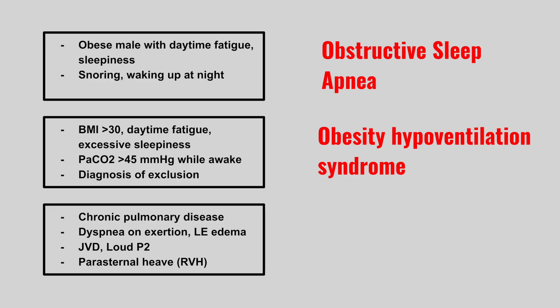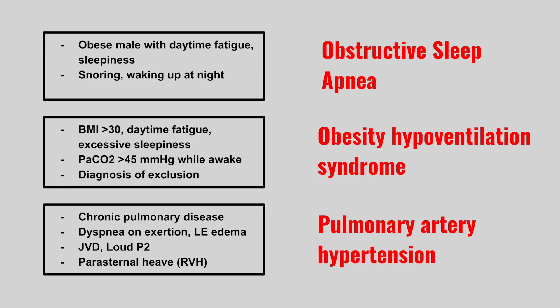Next, we have a patient with chronic pulmonary disease. They have dyspnea on exertion, lower extremity edema, JVD, a loud P2, and a parasternal heave, indicative of right ventricular hypertrophy. This is pulmonary artery hypertension.